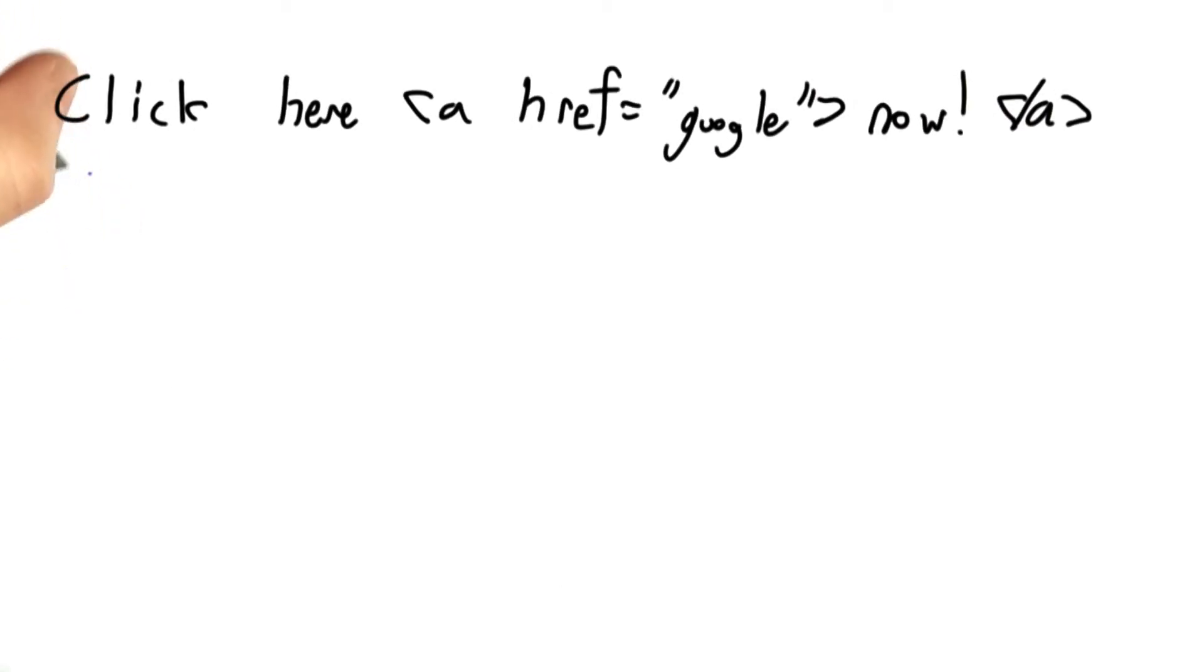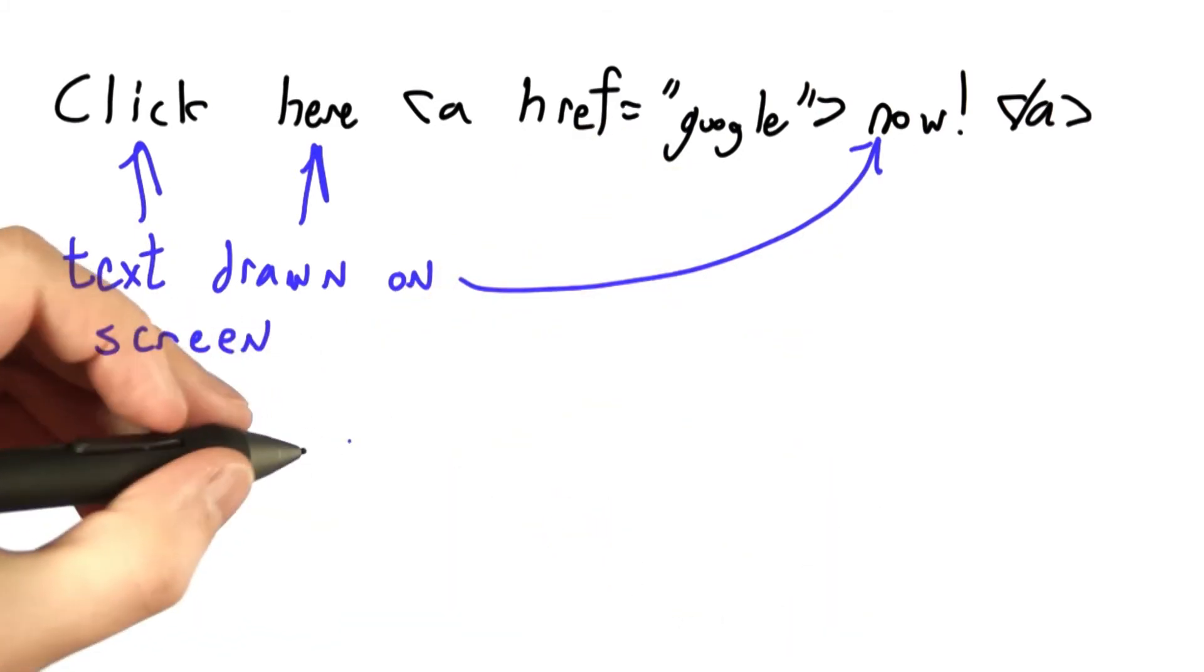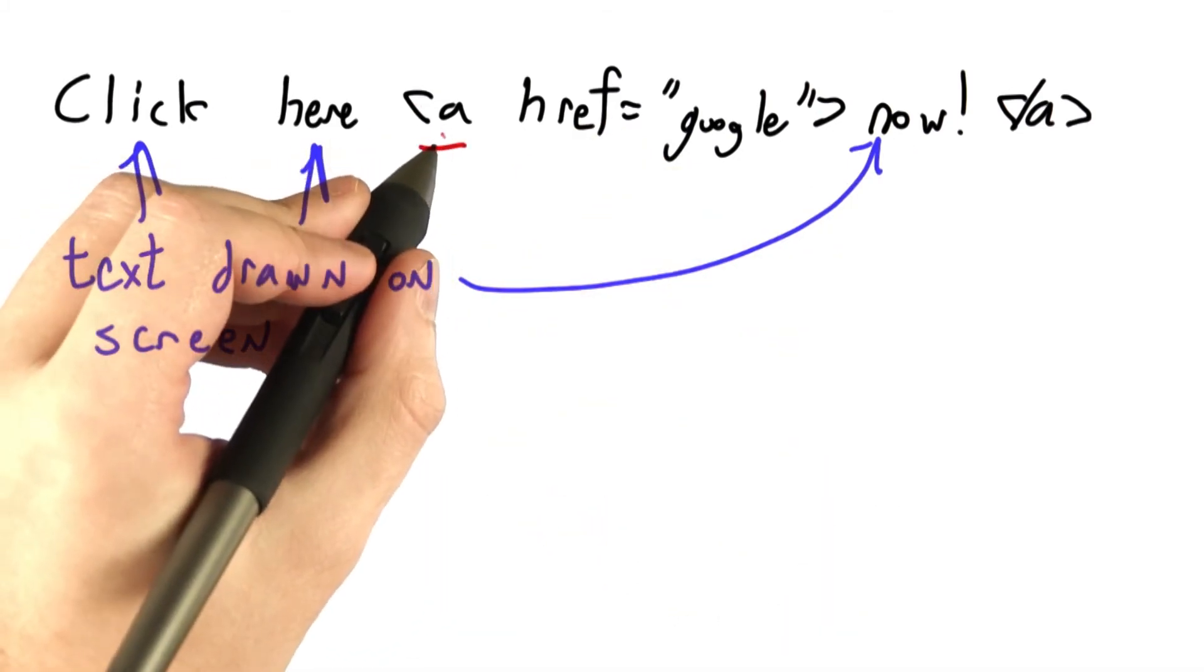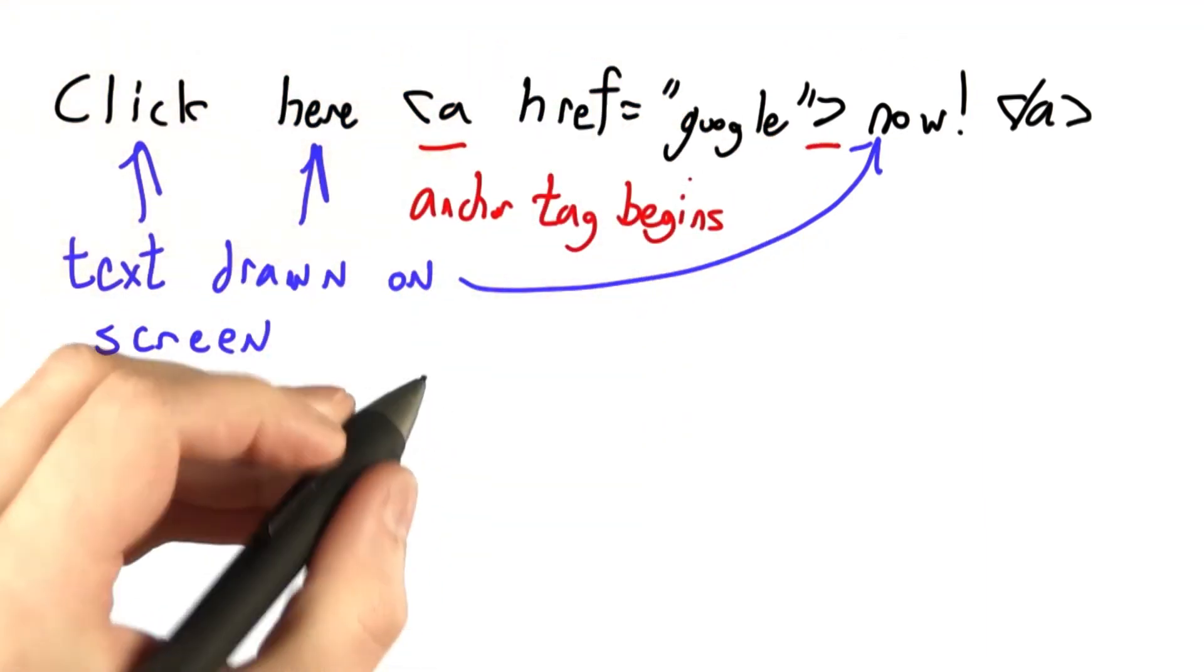Just to break this down, if this is a fragment of HTML, then the words click here and now will all be drawn on the screen. This syntax marks the beginning of the anchor tag.